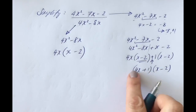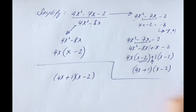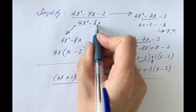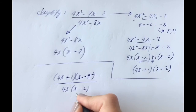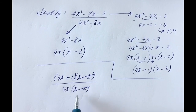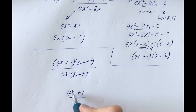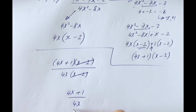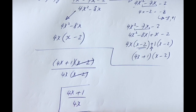Rewriting with the factorized versions: (4x + 1)(x − 2) on top and 4x(x − 2) on the bottom. Cancel (x − 2) from top and bottom since it's multiplied to everything on both sides, leaving (4x + 1) / (4x). Can we cancel the 4x's? No — the 4x on top is being added to the 1, not multiplied to everything on top. So the final answer is (4x + 1) / (4x).